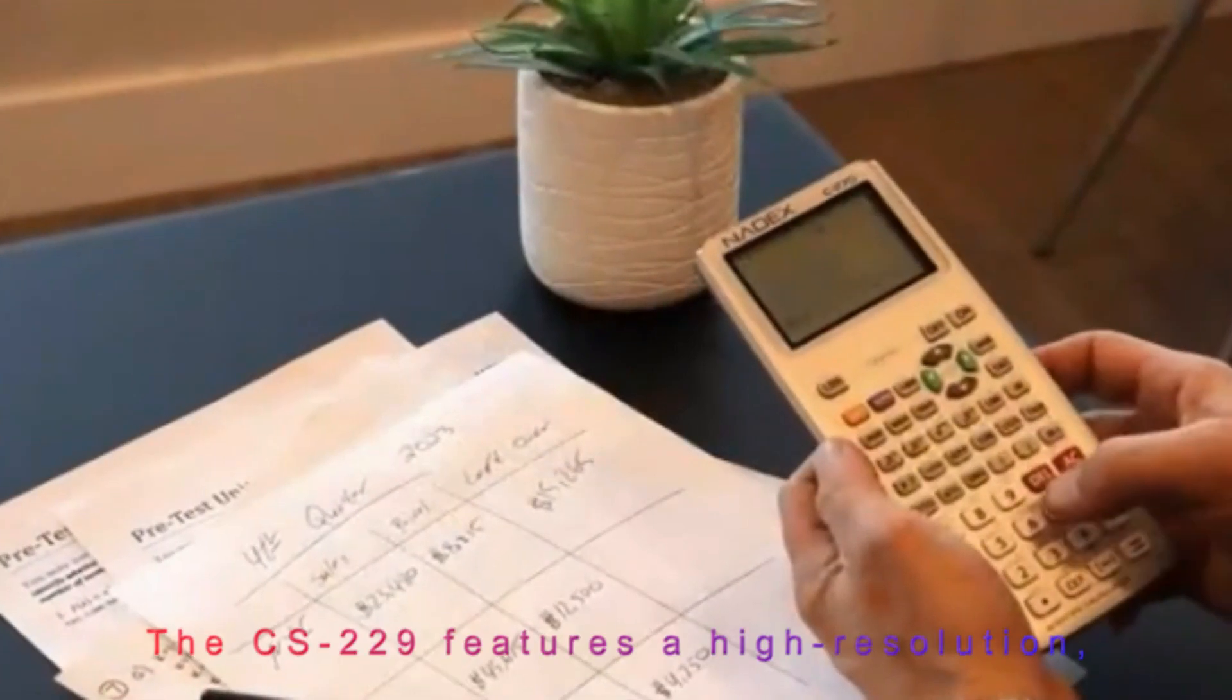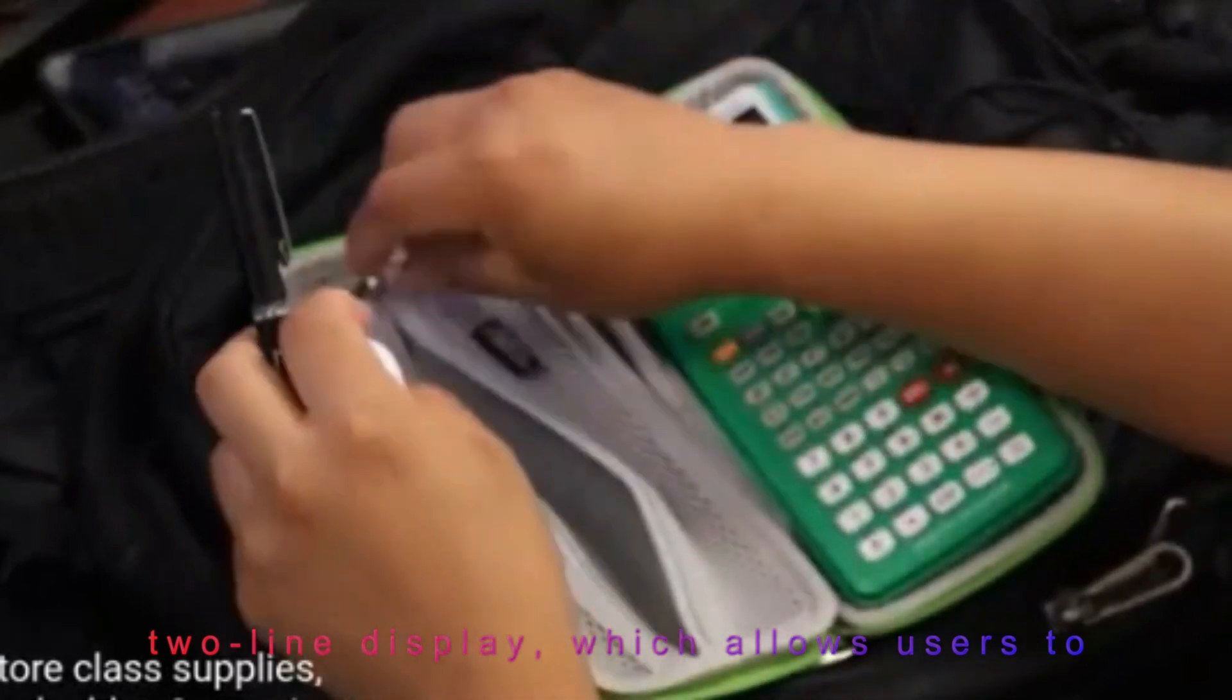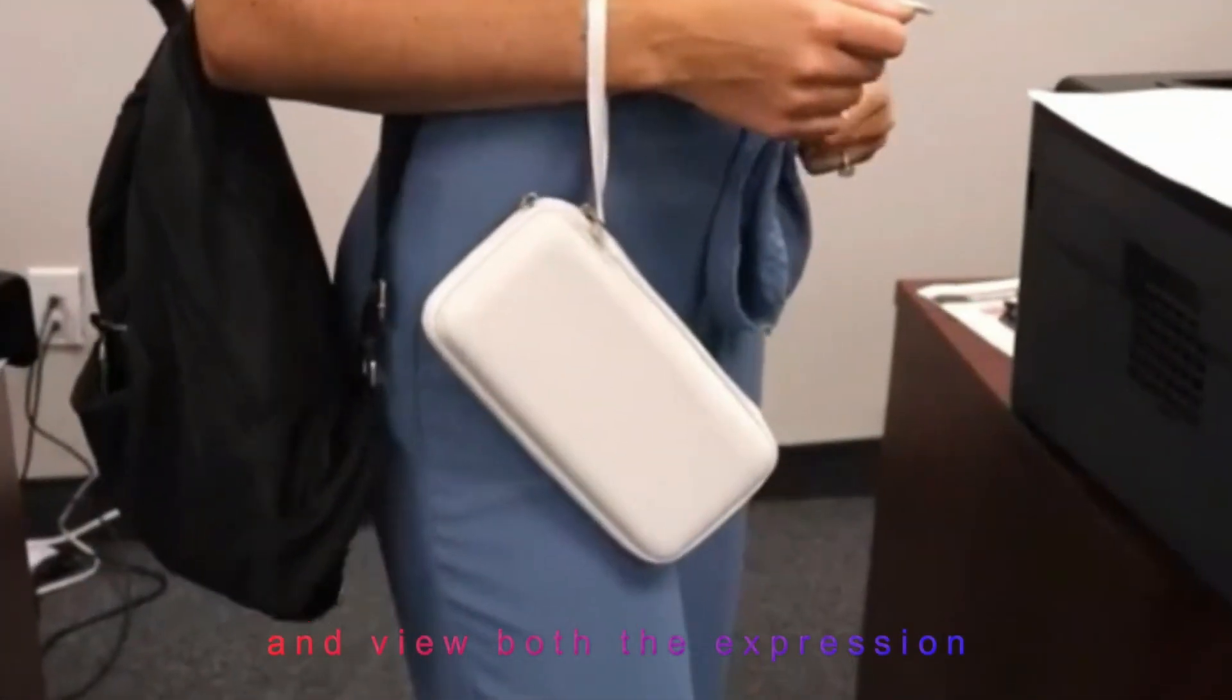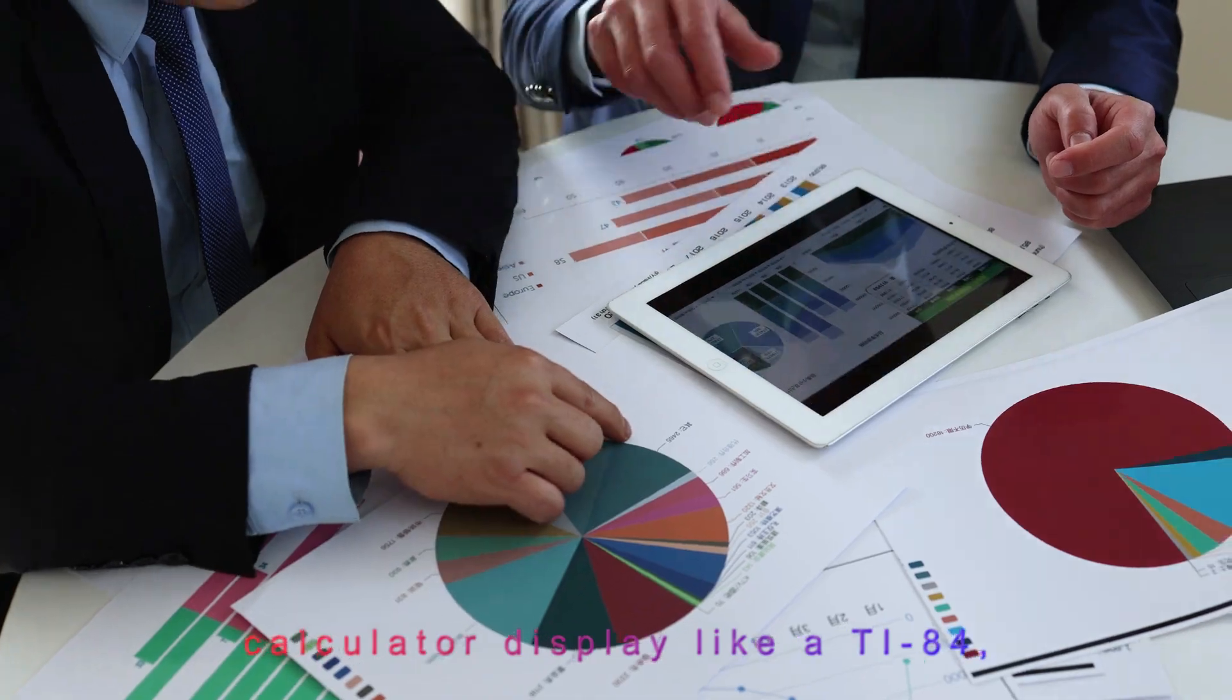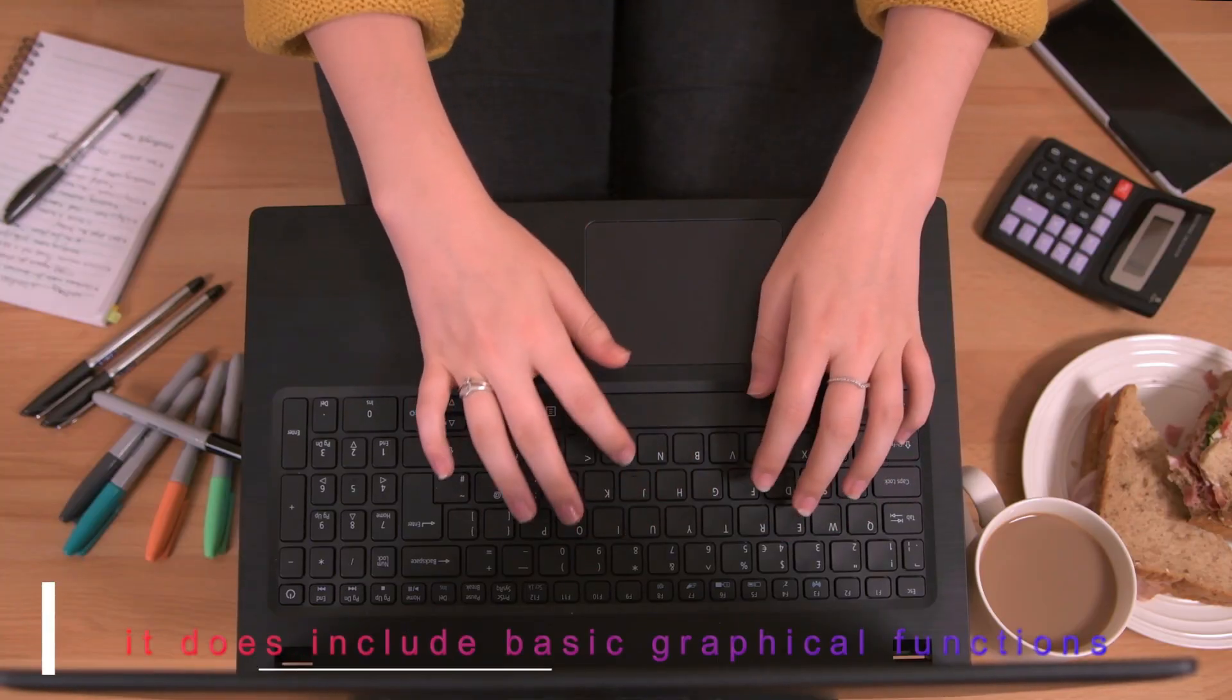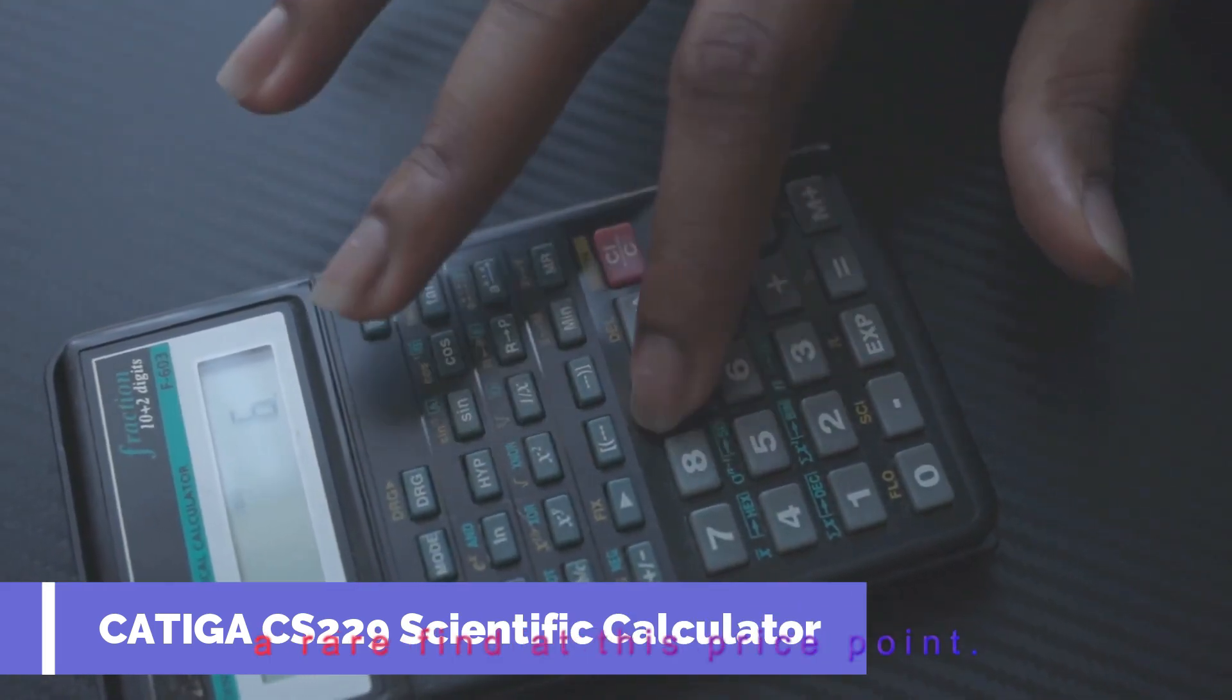The CS229 features a high-resolution, two-line display, which allows users to input equations in natural math notation and view both the expression and result simultaneously. While it doesn't offer a full graphic calculator display like a TI-84, it does include basic graphical functions that help visualize equations, a rare find at this price point.